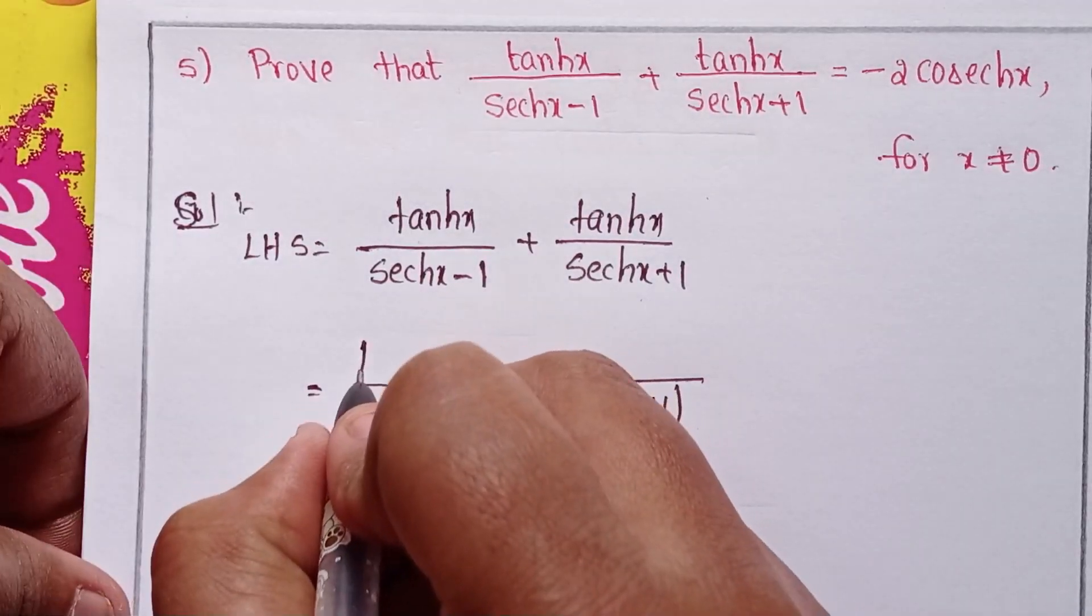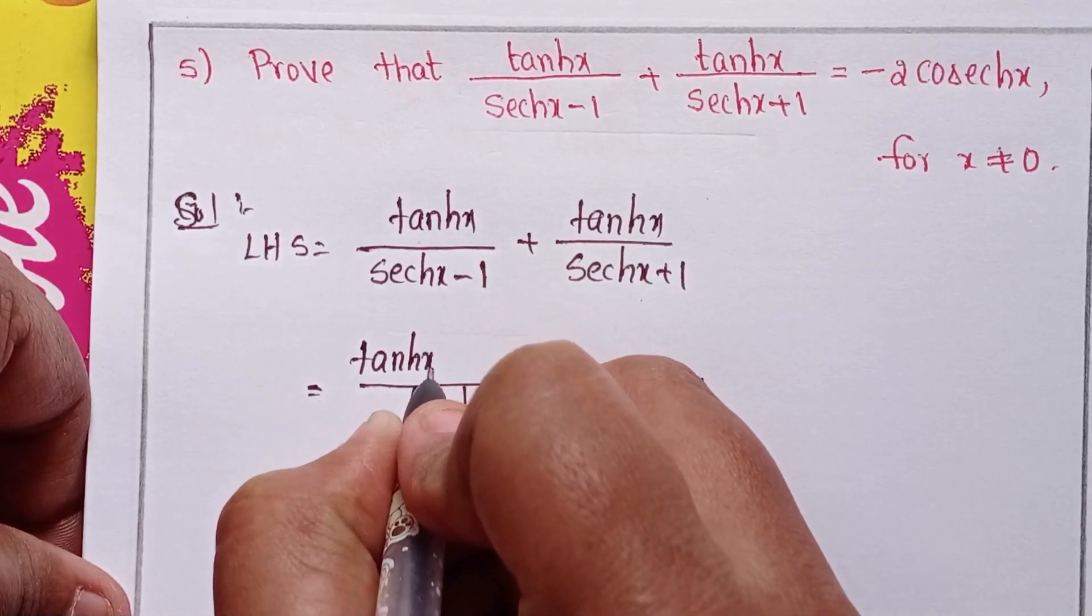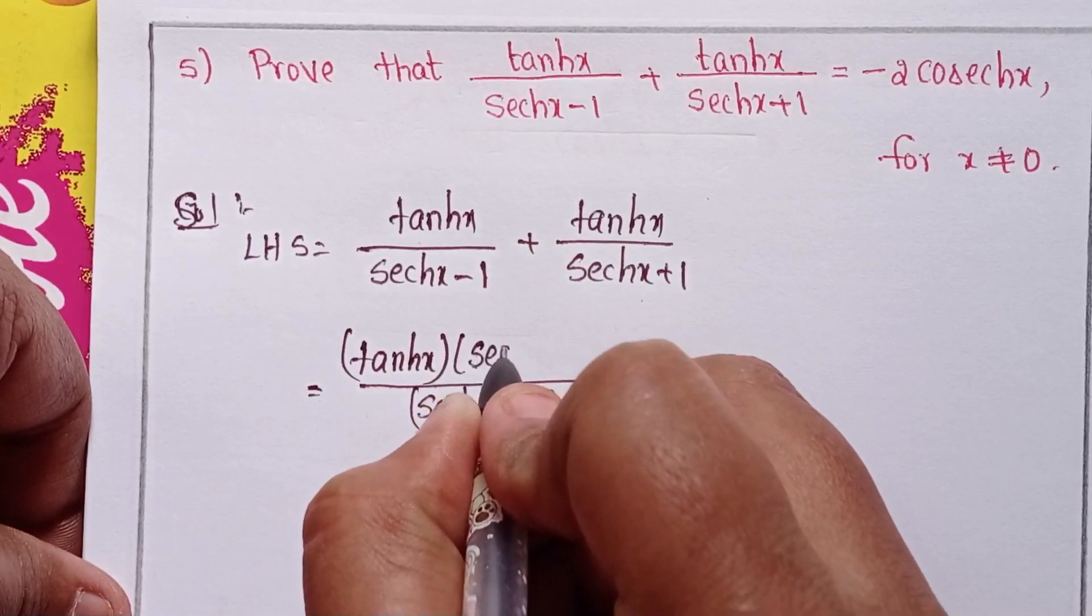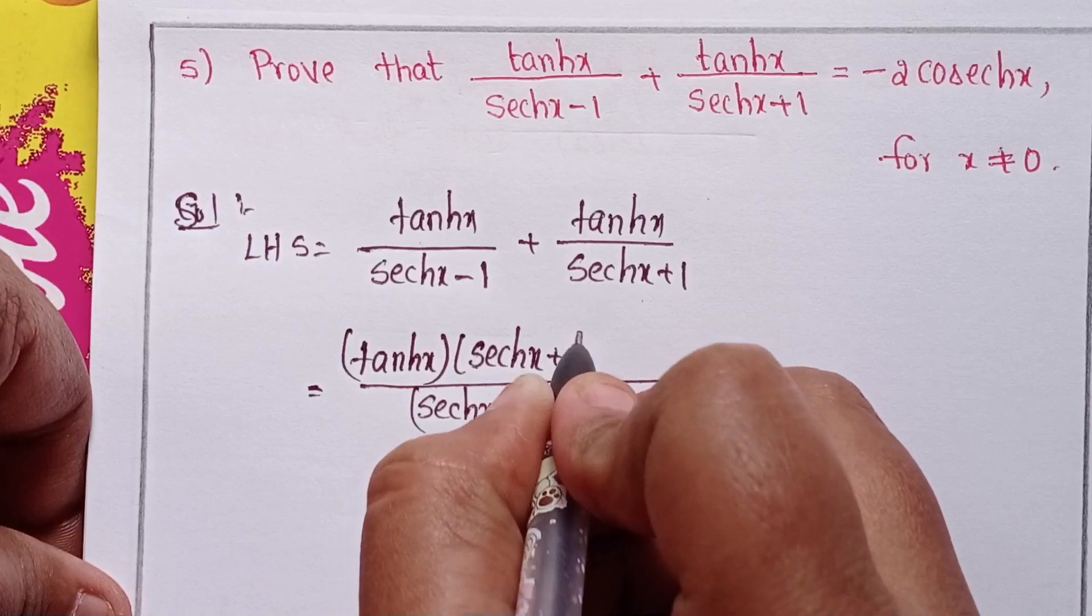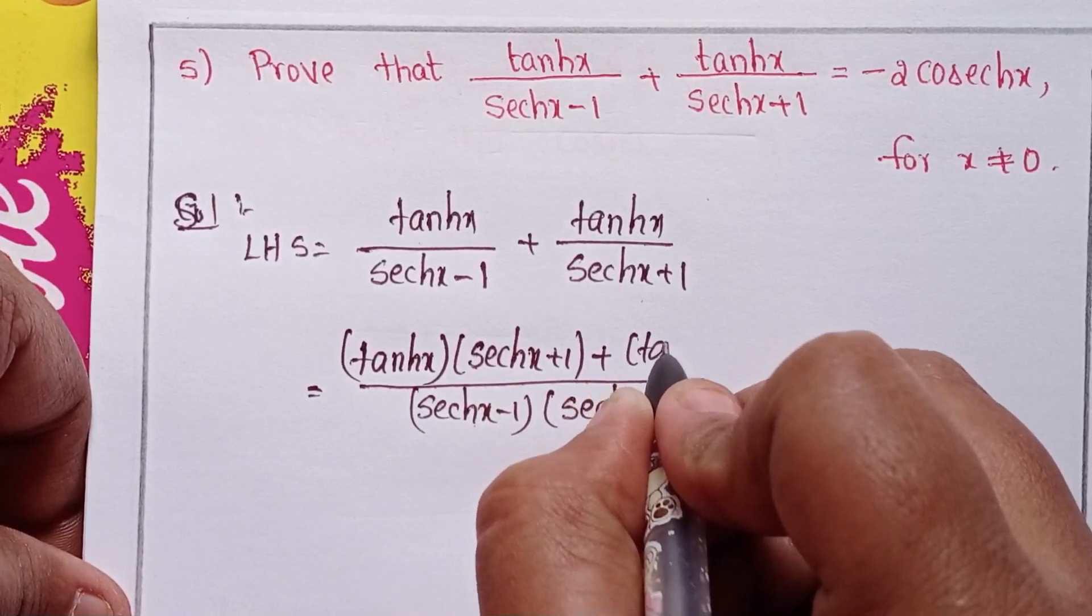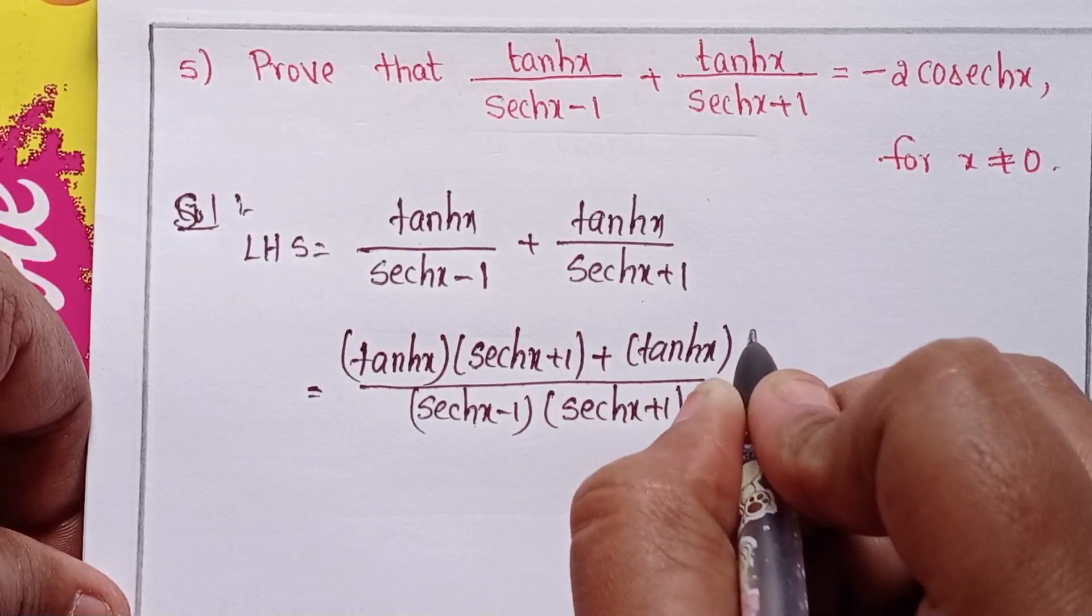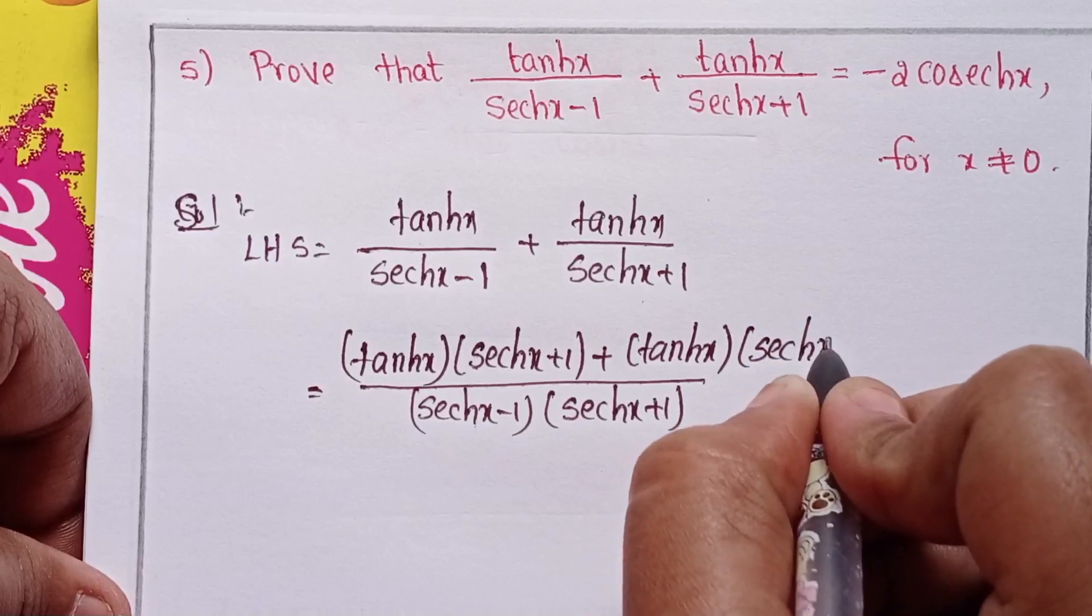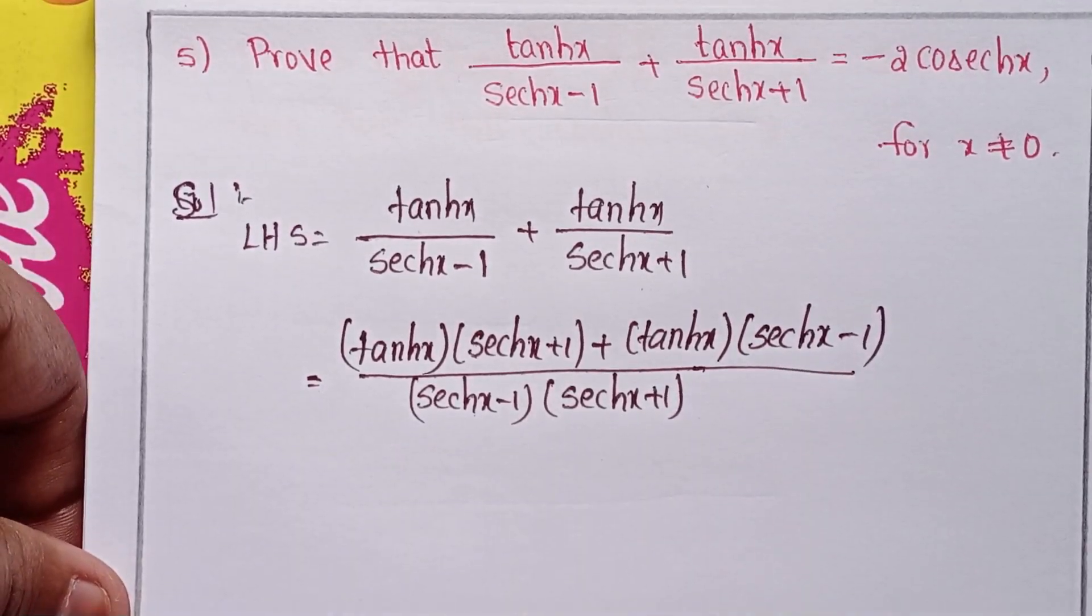Cross multiplication gives tanh x times sech x plus 1, plus tanh x times sech x minus 1.